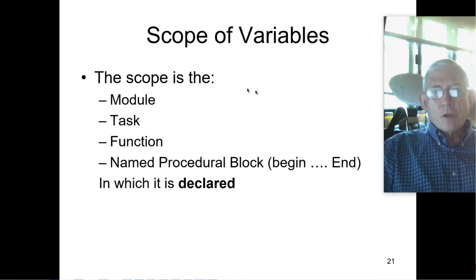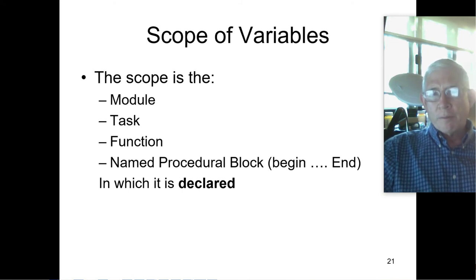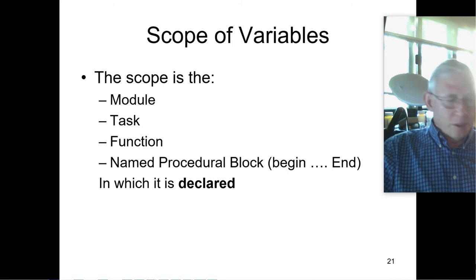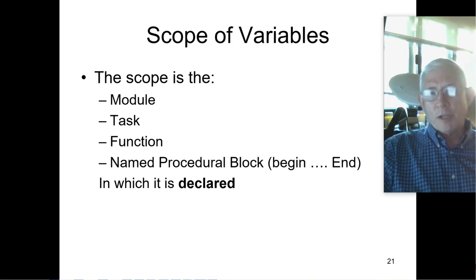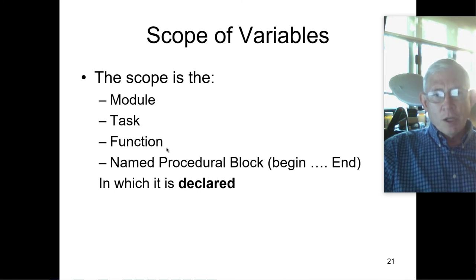Scope of variables: just like in C, when a variable comes into existence, it exists within a scope. Usually in C, we like to try and restrict our variables to the function they're used in. In C, we have global variables, even though we're discouraged from using them, because it's easy to mess with a variable in two different places and forget. Keeping the scope within a single function tends to work a whole lot better. Within Verilog, the scope can be within a module, within a task, within a function, or within a named procedural block if it's declared there, between the beginning and the end.